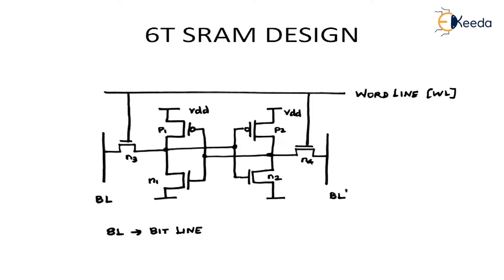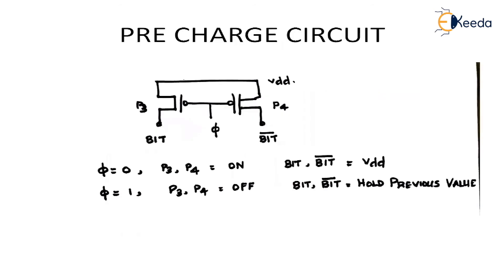Now let's see how read and write operations are carried out using this 6-transistor SRAM. Since it is a memory, we need to read and write data. The data written is either a 1 or a 0. Sometimes a 1 will be stored and we will read what is present, and at other times we will write a 0 or 1 and see how that operation is carried out.